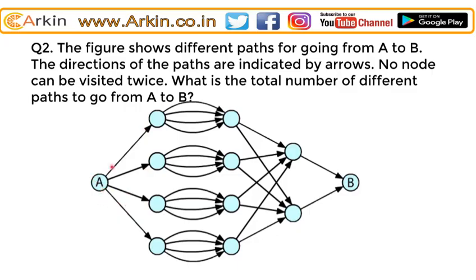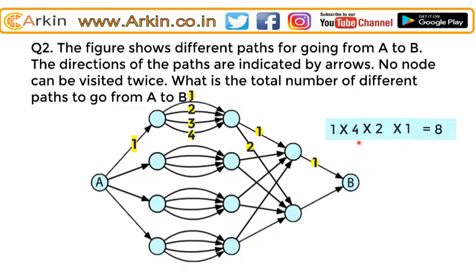From A to the first node there is only one way. From here to the second node there are four ways, so total till here it will be four ways. From here there are two arrows coming out, so it will be two ways — one into four into two. Again from here only one, so total eight ways to reach from A to B through this node. But there are four such nodes, so total it will be eight into four, that is 32.